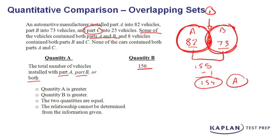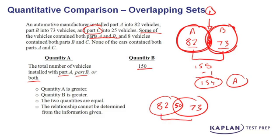But if that overlap section were something like 50, well now you're going to do the same thing — 82 plus 73 is 155, but you've got to subtract out that 50, and we now get 105. In this scenario, Quantity B would be the greater value. So in one scenario Quantity A would be the bigger value, and in another scenario Quantity B would be the bigger value.